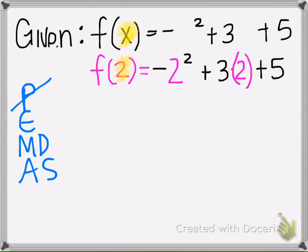So this is going to be 2 to the second power. So 2 times 2, which is 4, and then we're going to bring down that negative.